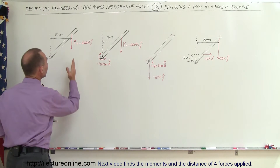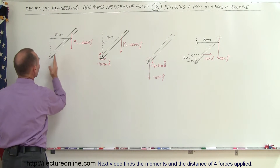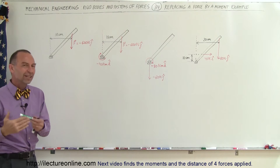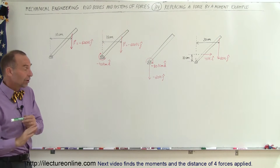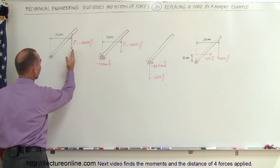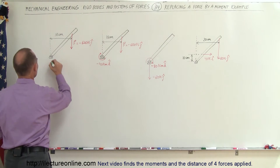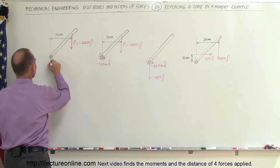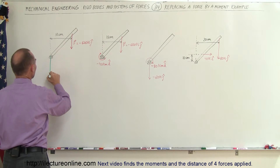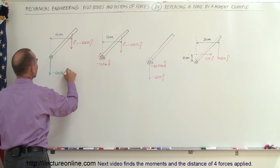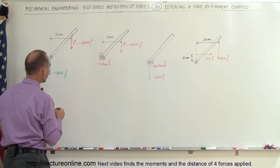The first thing we want to do is move this force over to the pivot, because the sum of the forces in the x, y, and z directions cannot change. So this force needs to come over here and we draw a new force equal to minus 600 newtons in the j direction.